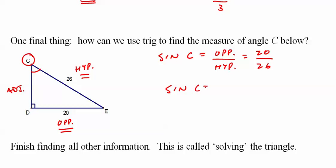So if we know that sine of C equals 20 over 26, we know that C equals sine to the negative first of 20 over 26.